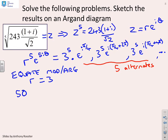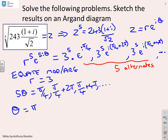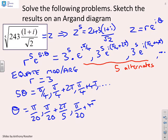Now the first bit's obvious. You can see that r equals 3. That's the easy bit. And for the angle, you get 5 theta equals pi by 4 or pi by 4 plus 2 pi or pi by 4 plus 4 pi and so on. I'm not going to write them all because I need a bit of space left on the screen. So if I then divide through by 5, I get theta equals pi by 20 or pi by 20 plus 2 pi by 5 or pi by 20 plus 4 pi over 5 and so on.